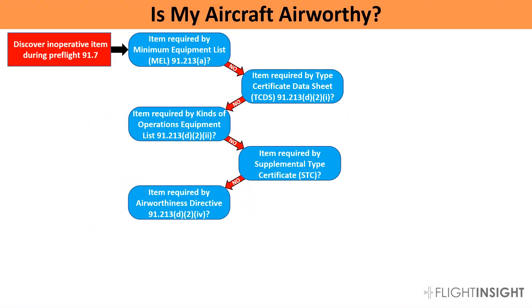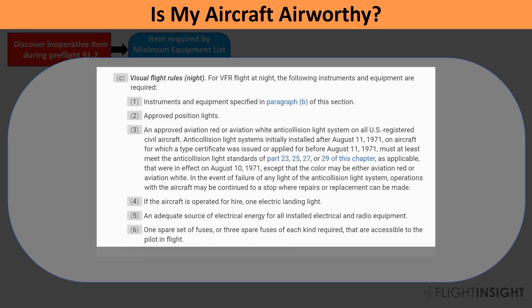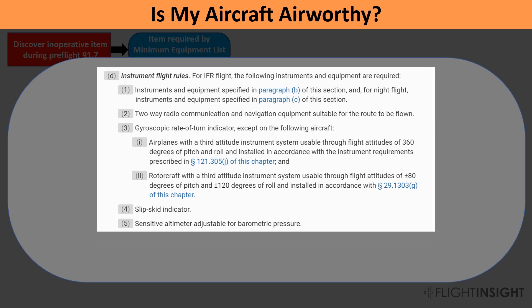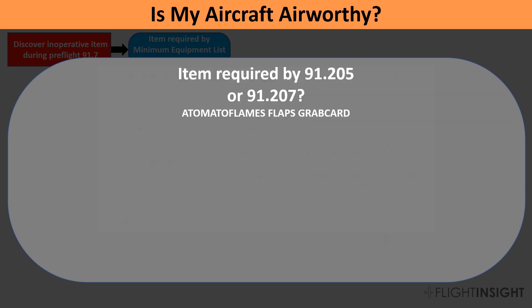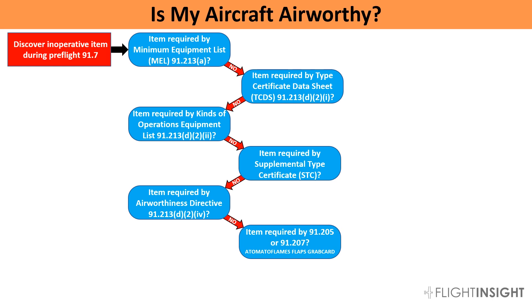Finally, after having satisfied all those questions, we move on to the familiar 91.205 and 91.207. 91.205 lists the required equipment for daytime VFR — ATOMATOFLAMES, with an assist from 91.207 on the ELT — nighttime VFR, and IFR flight — GRAB CARD. Anyone answering that looking at these lists alone for whether an inoperative piece of equipment is cause for grounding is not giving a complete answer. All the other lists we mentioned can either provide some relief from these requirements, such as the right-side harness in the Seminole we saw in the MEL, or provide greater restriction, like the carb heat requirement for the 172 Papa. We need to work through this whole exercise.